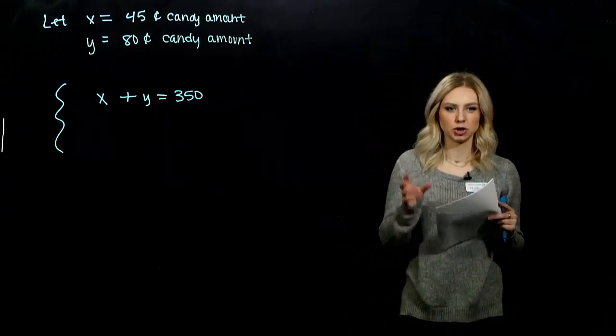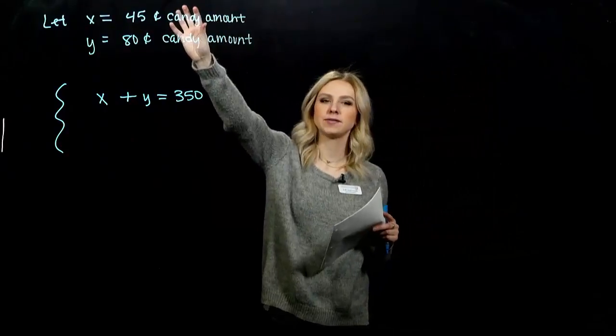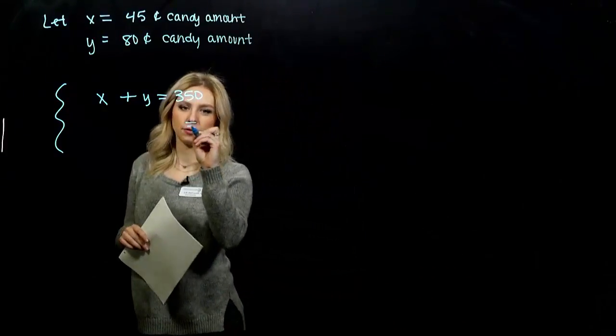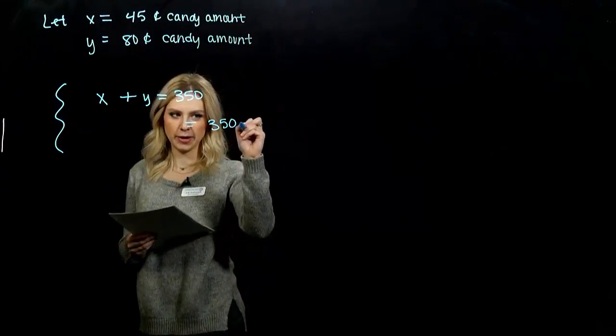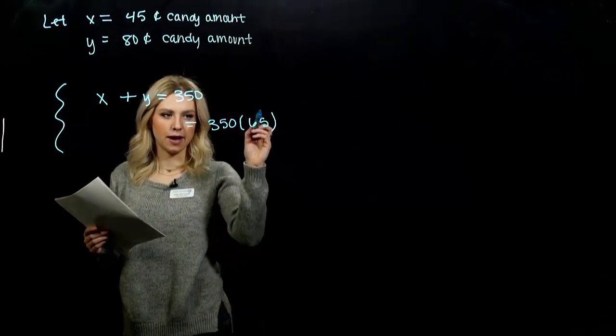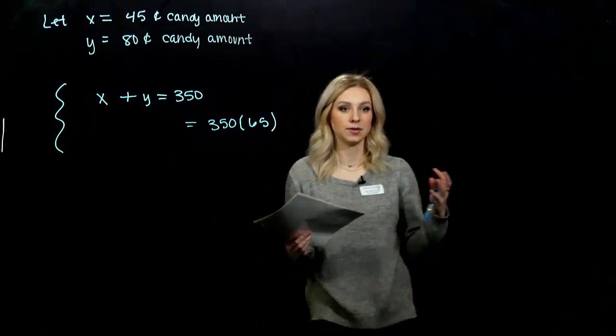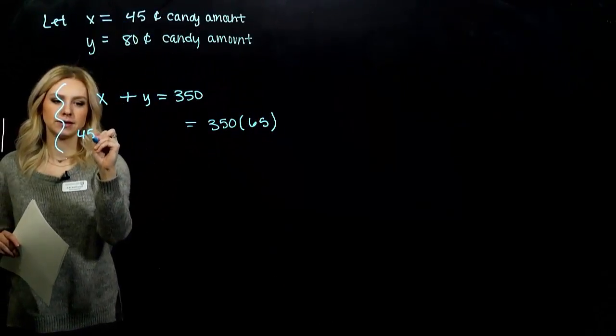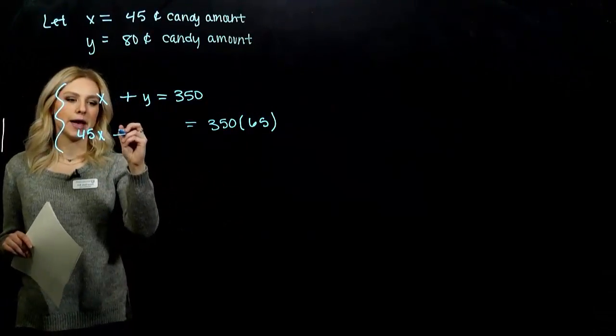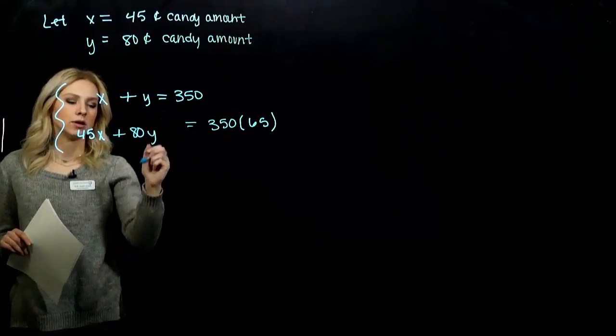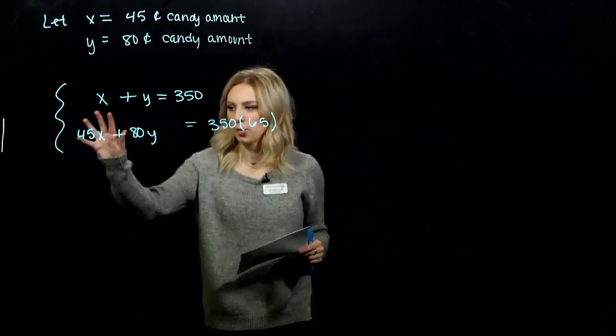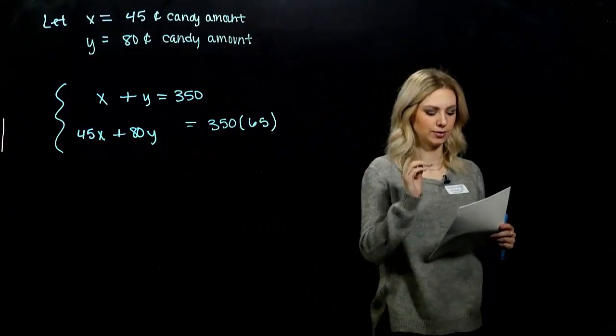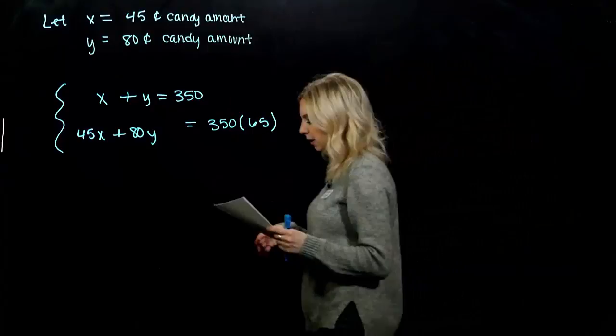We want to talk about the total price. If I have 350 pounds and the price per pound is 65 cents, multiply 350 by 65 to get the total amount in cents. The total price of what I'm adding from x is 45 cents times however many pounds from that pile, plus 80 cents per pound from the other pile. Total price plus total price equals total price. All units have to line up.